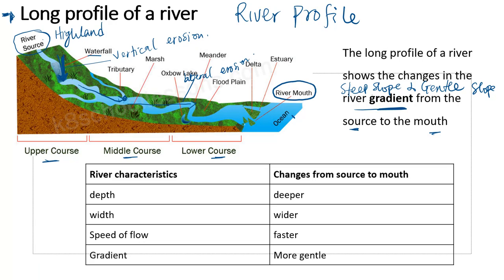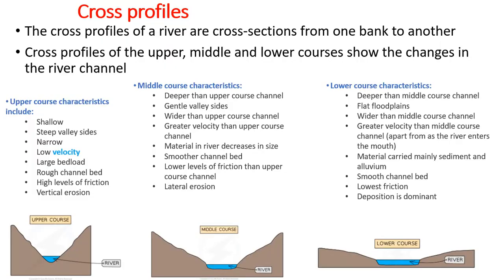This is important for past papers — river characteristics and changes from source to mouth. The depth becomes deeper, the width becomes wider, and the speed of flow becomes faster from source to mouth. The gradient becomes more gentle, changing from steep to gentle as it moves from source to mouth.